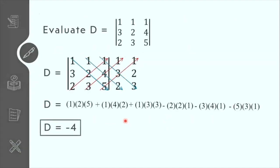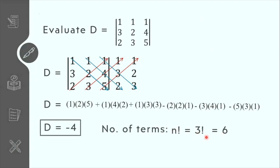Going back to the previous example, our previous example was order 3. Therefore, 3 factorial is equal to 6, so we have 6 terms — and indeed we have 6 terms there.